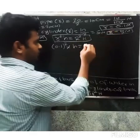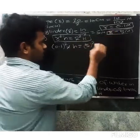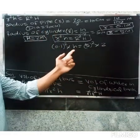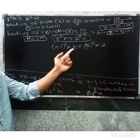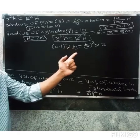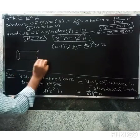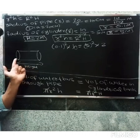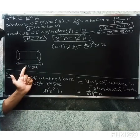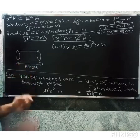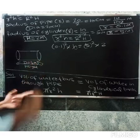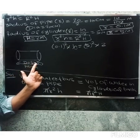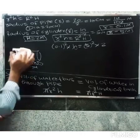The height of the pipe represents the distance water travels. The area of the pipe's cross-section times the height gives the volume. The distance traveled by water equals speed into time.